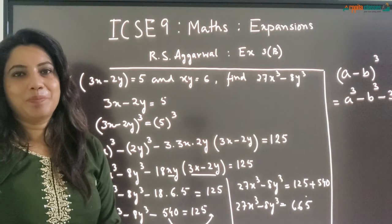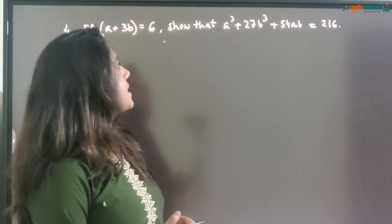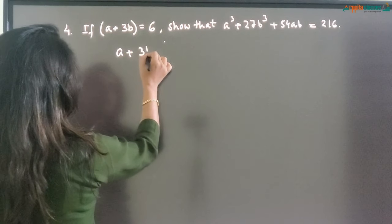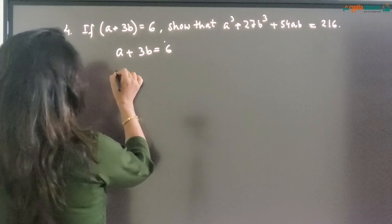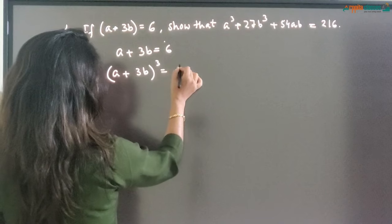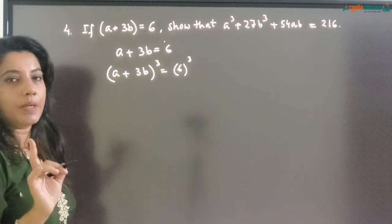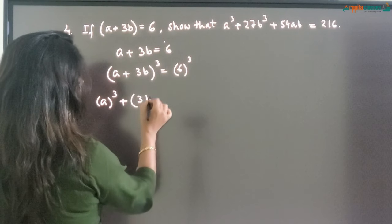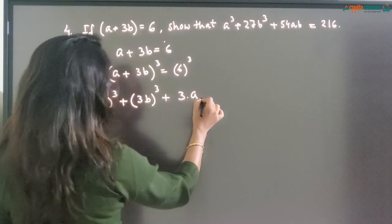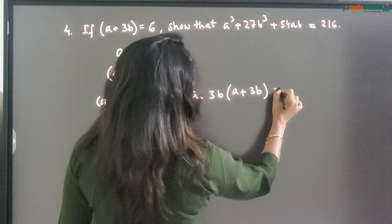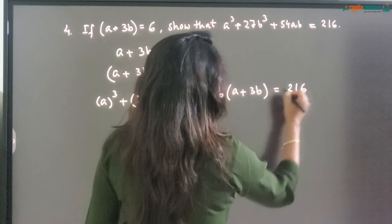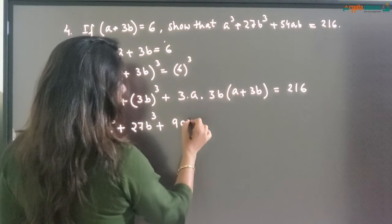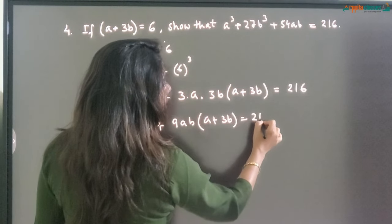Getting 540 to the other side: 27X cube minus 8Y cube is equal to 125 plus 540, which is 665. Now in question number 4, A plus 3B is given as 6 and we have to show that A cube plus 27B cube plus 54AB is equal to 216. Cubing both sides, A plus 3B whole cube is equal to 6 the whole cube, which gives us A cube plus 3B cube plus 3 into A into 3B whole into A plus 3B equals 216.